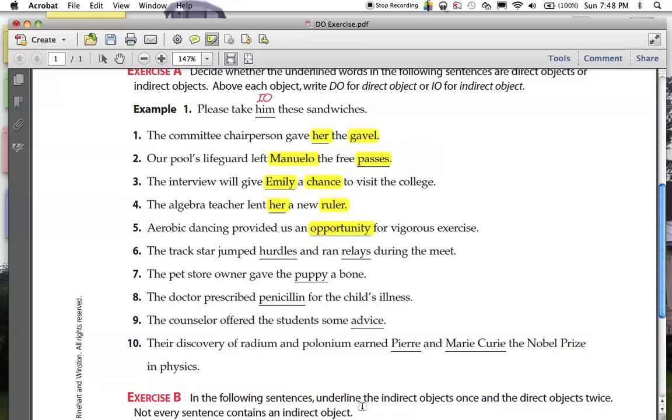Number five, opportunity, direct object. Why? Aerobic dancing provided what? Opportunity. Who did it provide that opportunity to? Opportunity to us. So us would be the indirect object.